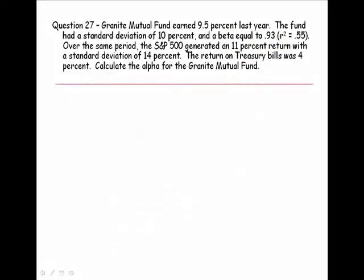Here's the same company, and now we're asked to calculate the alpha for Granite Mutual Fund. We have a 9.5% rate of return on Granite Mutual Fund, a standard deviation of 10%, and a beta equal to 0.93. The S&P generated an 11% return with a standard deviation of 14%. The return on Treasury bills was 4%. Calculate alpha.